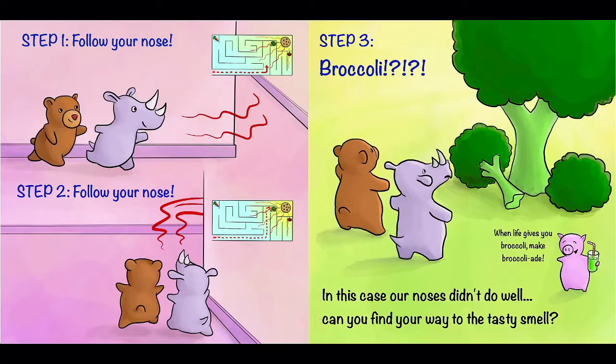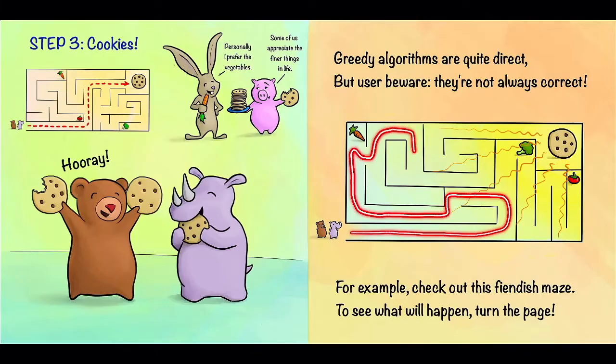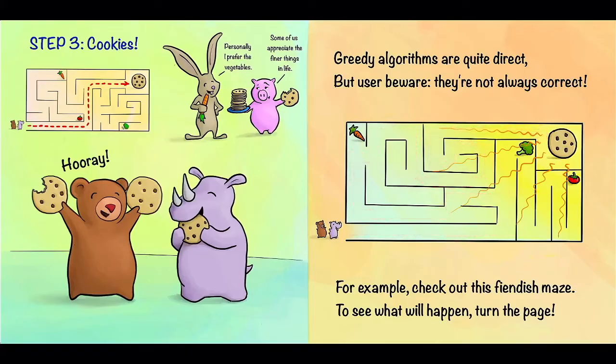In this case, our noses didn't do well. Can you find your way to the tasty smell? Let's go back to that fiendish maze and see if we can. So here's the maze from the previous page. Let's see if we can find our way to the cookie. Let's not do that. Instead, we'll have to go this way, away from the tasty smell. Careful about the carrots. And all the way around to the cookies! Yay!